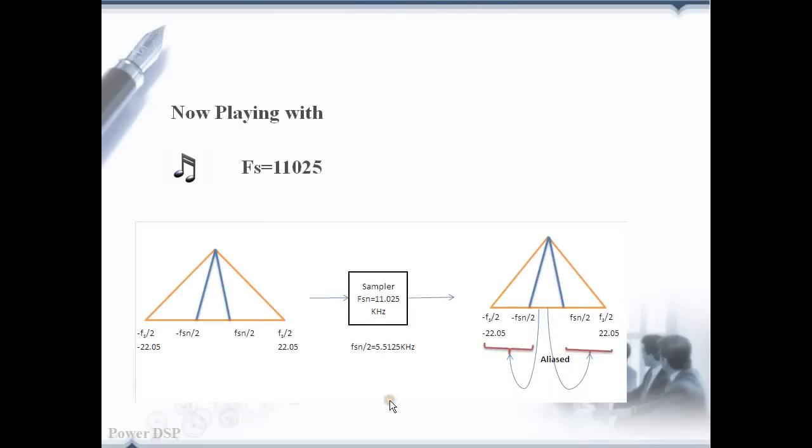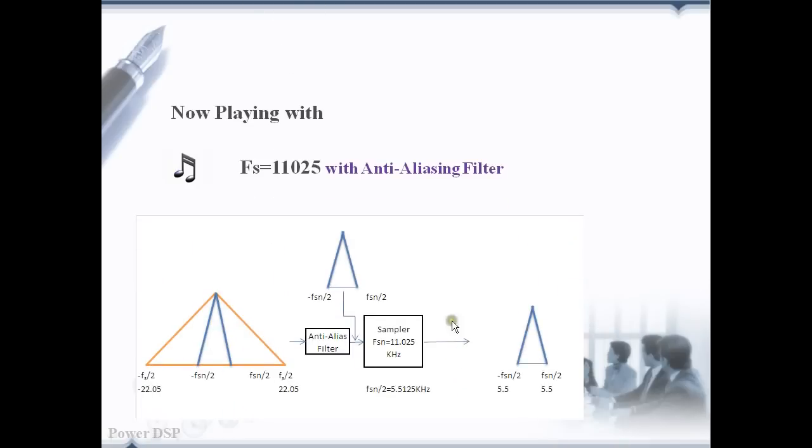Next, we will see the signal being played with the sampling frequency of 11.05 kHz. We saw the aliasing effect in the played music. Next, anti-aliasing filter is used to remove the frequency components from Fs by 2 to Fs by 2. Let's see how it sounds.